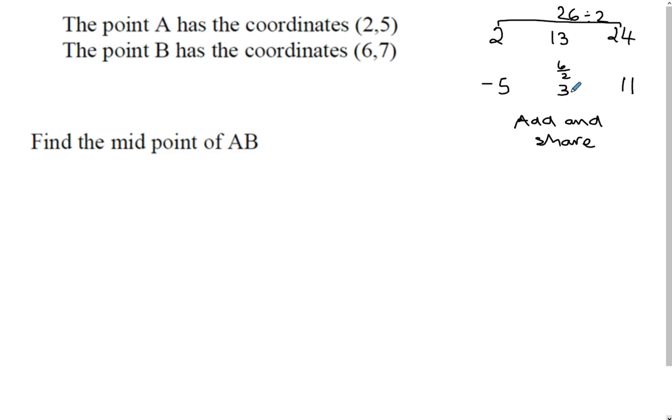With coordinates, we do exactly the same, so we'll add our x coordinates, so you've got 2 plus 6 divided by 2, and your y coordinate will be 5 plus 7 divided by 2. If you write it that way, you can see your coordinates just come out, so here you've got 2 plus 6 is 8, divided by 2 is 4, and 5 plus 7 is 12, 12 divided by 2 is 6. So simple.